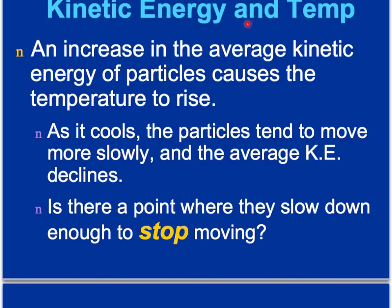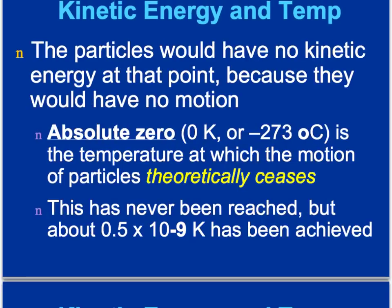An increase in the average kinetic energy of particles causes the temperature to rise. As a substance cools, particles tend to move more slowly and the average kinetic energy declines. You might ask: is there a point where they slow down enough to stop moving completely? If the particles were not moving, they would have no kinetic energy because they would have no motion. This temperature is called absolute zero — 0 Kelvin, or negative 273 degrees Celsius.